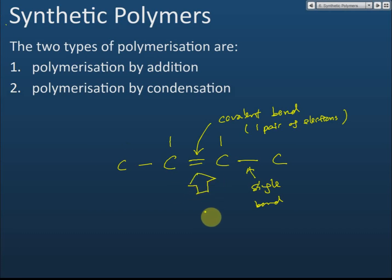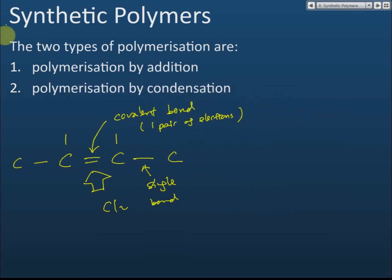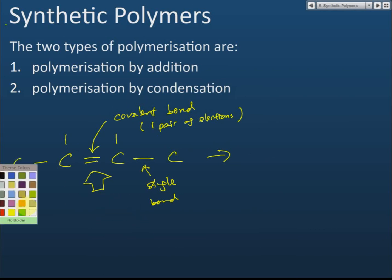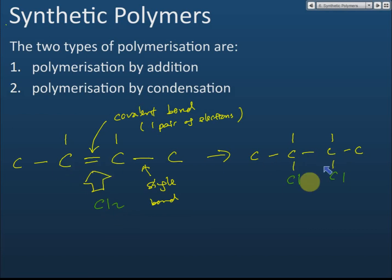For example, we can add chlorine into a double bond. After adding chlorine (shown in green), the chlorine attaches to the two carbon atoms and the double bond is eliminated — it no longer exists. This process of adding something to a double bond is called an addition reaction.